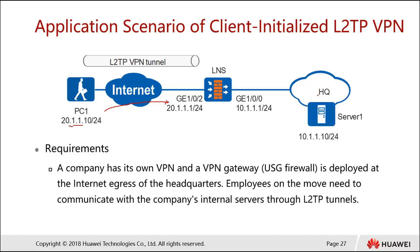This is the headquarters. The firewall is technically called the LNS, which stands for the L2TP Network Server. On the other side of the firewall is the private IP address, 10.1.1.x, which connects to the headquarters. The objective is to allow PC1 to connect to Server 1 via an L2TP VPN tunnel.